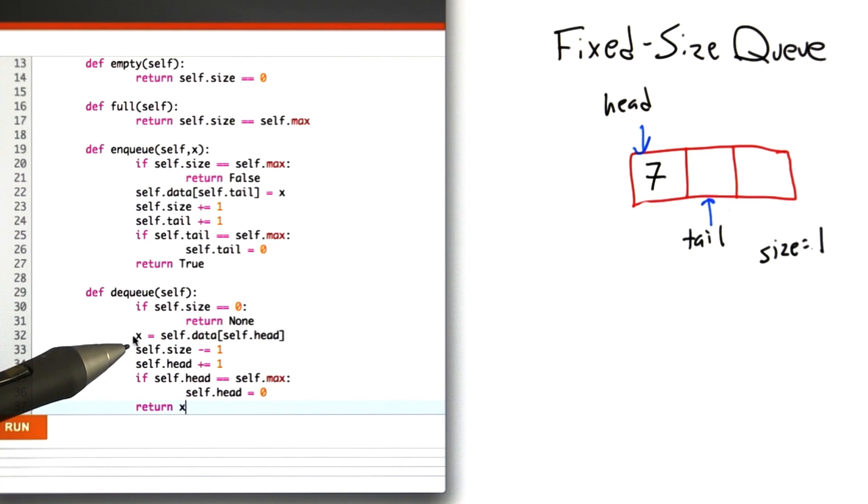If we pass that test, then there is something to return. We store the item from the head of the queue in a temporary variable, so x gets 7. We decrement the size of the queue, move the tail pointer to point to the next element, and using logic similar to the tail pointer in the enqueue function, we wrap the head pointer around if it's gone past the end.